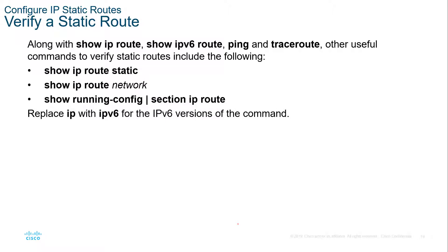So how do we verify our static routes? Three main commands: show IP static route, show IP route, and show running-config looking at the IP route sections. If we're looking at IPv6, instead of doing show IP, it would be show IPv6. IP denotes IPv4, IPv6 denotes IPv6.